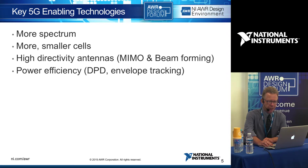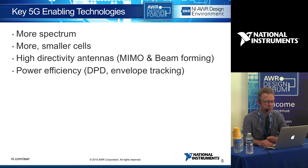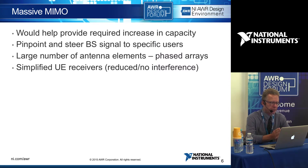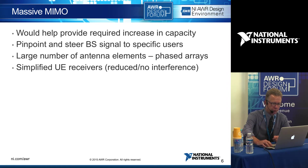The antennas — high directivity — really come down to beamforming techniques, intelligently steering the beams to avoid interference. That means highly massive MIMO techniques to realize the antennas. MIMO will be mandatory in 5G and will help provide the increase in capacity required. The idea is to pinpoint and steer base station beams to specific users in the cell simultaneously, reducing interference from neighboring users. There's a large number of antenna elements, and these phased arrays will have to be very intelligently steered, with simplified and reduced-cost user equipment as a benefit.